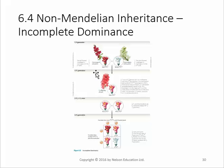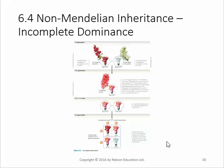So you get the red snapdragon and the white snapdragon. In the F1 generation, everybody's pink. Then you get the pinks and you end up with one red, two pinks, and a white. It still follows the Punnett square, but the genotype is more reflected in the phenotype — the heterozygous look different from the homozygous dominant or the homozygous recessive. This is incomplete dominance.